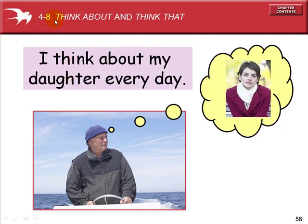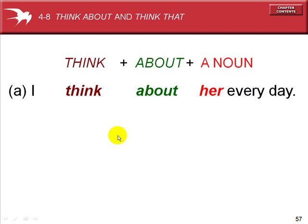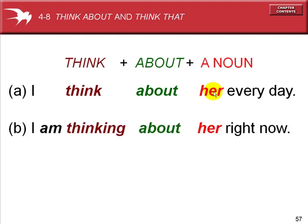Section 48: think about and think that. I think about my daughter every day. I think about her. To think about means to consider. It is an action verb. I am thinking about her right now, so it can be used as a present progressive tense.